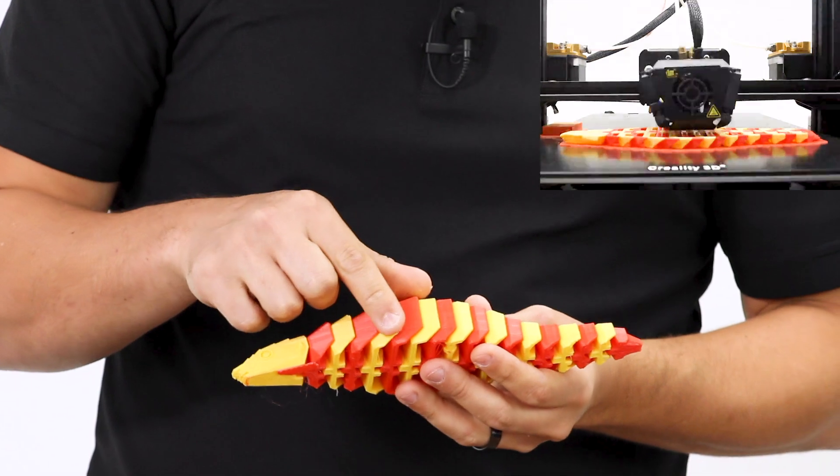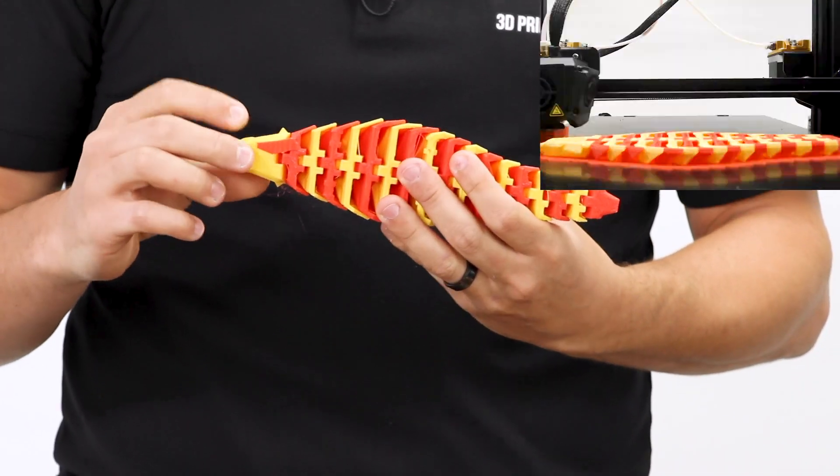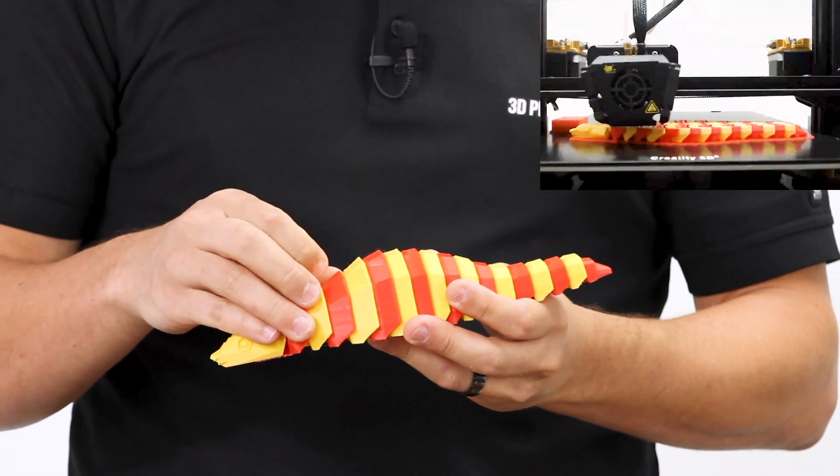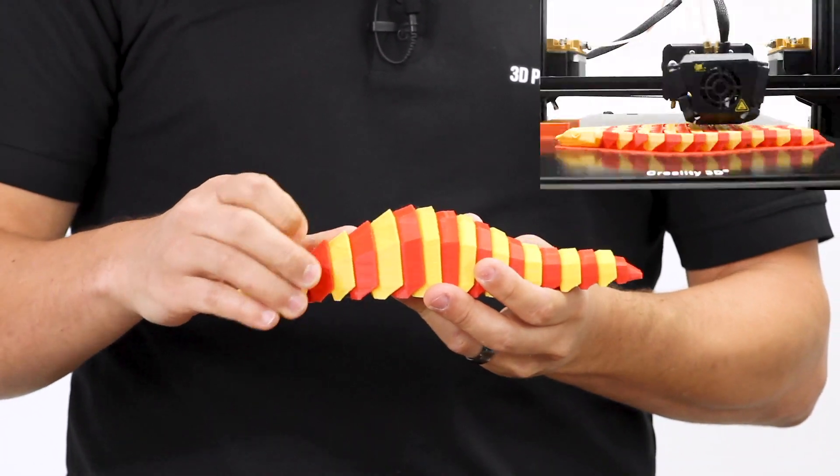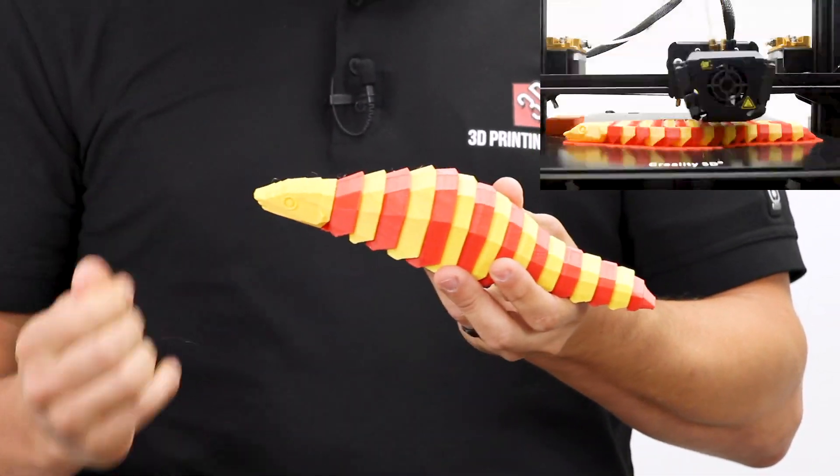But again, we see there's kind of inconsistent extrusion layer by layer. There's a little bit of banding. And in this case, there was a few little globs that will scratch off. So they're just kind of drooling from the extruder.